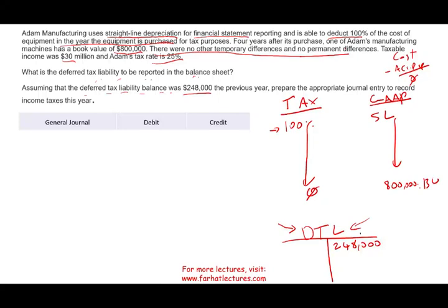Since you took the full deduction four years ago, you're no longer able to deduct this asset again. All we know is we still have $800,000 of book value remaining to be taken for financial accounting purposes. We will depreciate this $800,000 to bring the book value down to zero. That means we are still reversing this deferred tax liability. We don't know exactly over how long, but we know it will reverse at a tax rate of 25% since no future tax rates are given.